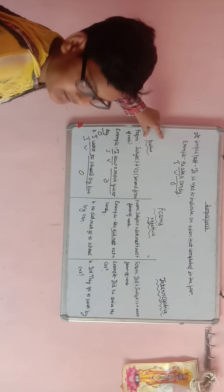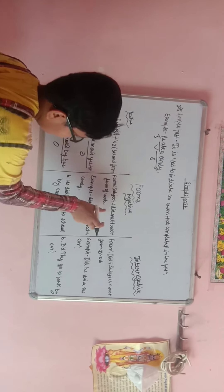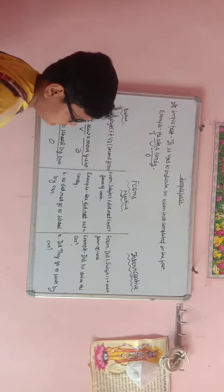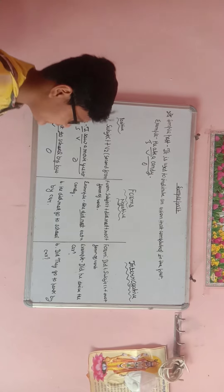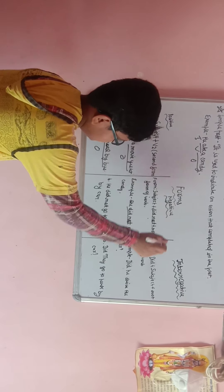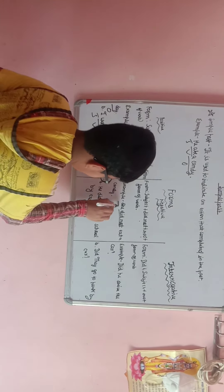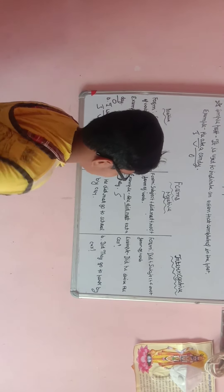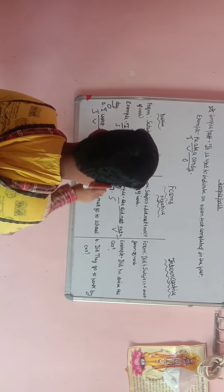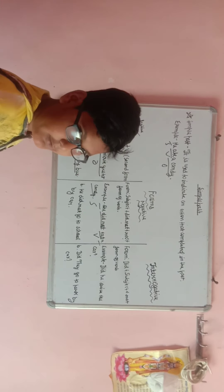So the positive form is clear. Now the negative form of simple past tense is: subject plus did not plus root form of verb. Root form means the first form of verb. For example, 'She did not eat a candy.' Here 'she' is the subject, 'did not' is added because it is negative, and 'eat' is the root form of the verb. 'A candy' is the object.